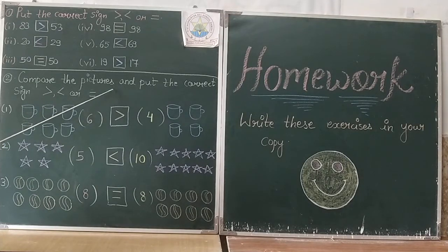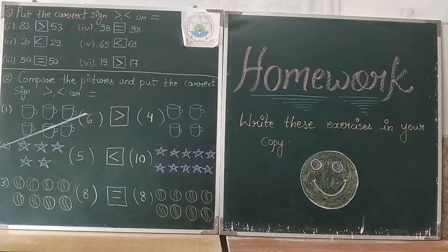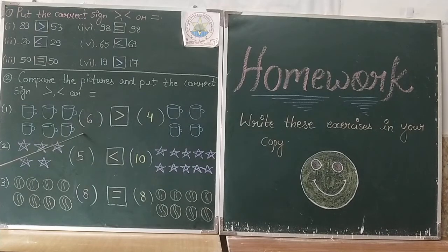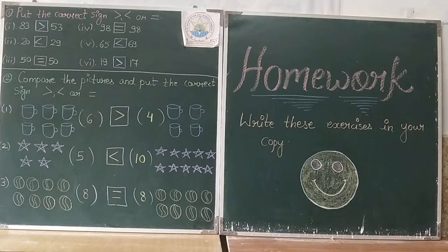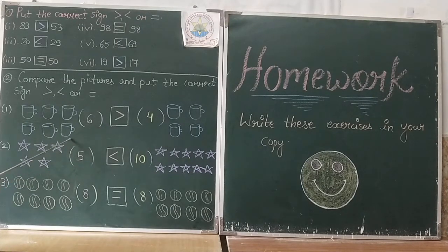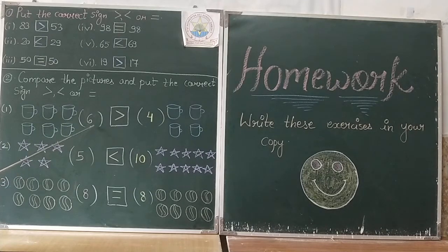Question number 2: compare the pictures and put the correct sign. अब यहाँ पर कुछ pictures बनी हुई हैं, आपको इनको count करना है और compare करके sign put करना है। Number 1 पर cups बने हुए हैं — 6 cups on one side and 4 cups on the other side. So 6 is greater than 4. यहाँ पर 6 बड़ा है, तो open mouth 6 की तरफ और smaller number 4 की तरफ closed mouth।